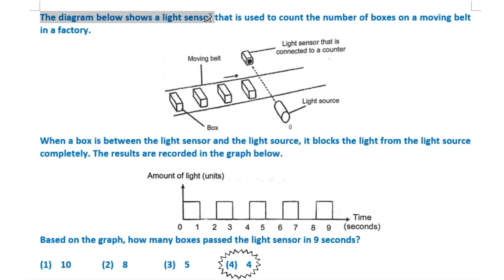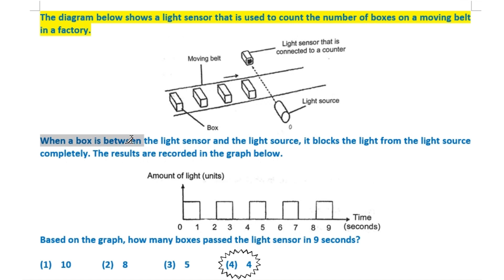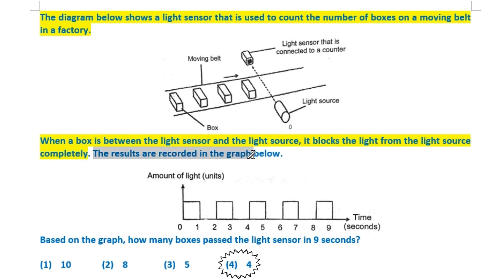The diagram below shows a light sensor that is used to count the number of boxes on a moving belt in a factory. When a box is between the light sensor and the light source, it blocks the light from the light source completely. The results are recorded in the graph below. Based on the graph, how many boxes pass the light sensor in 9 seconds?